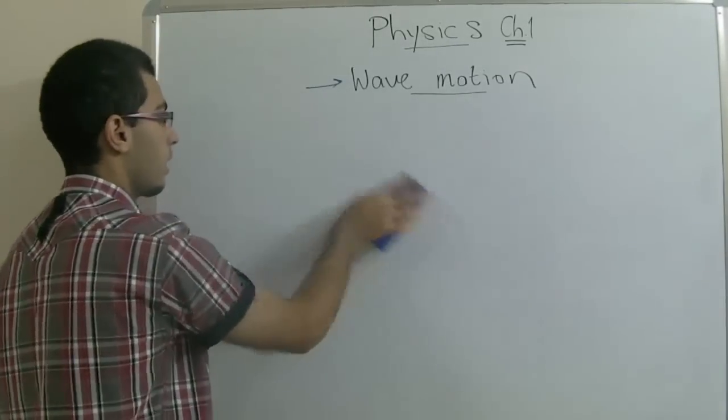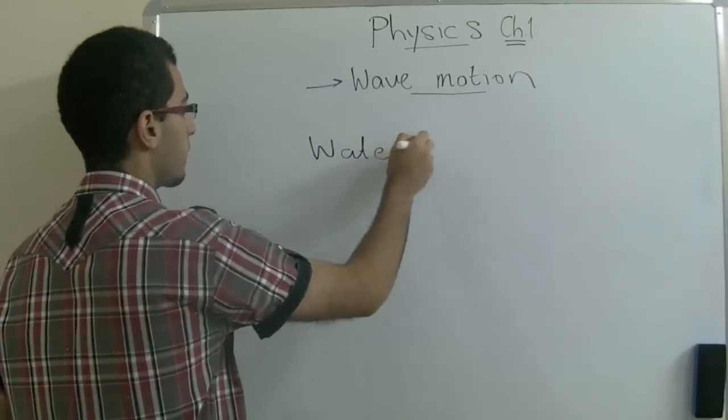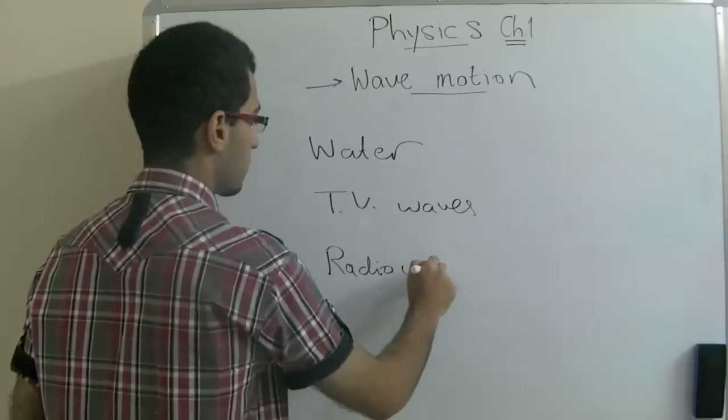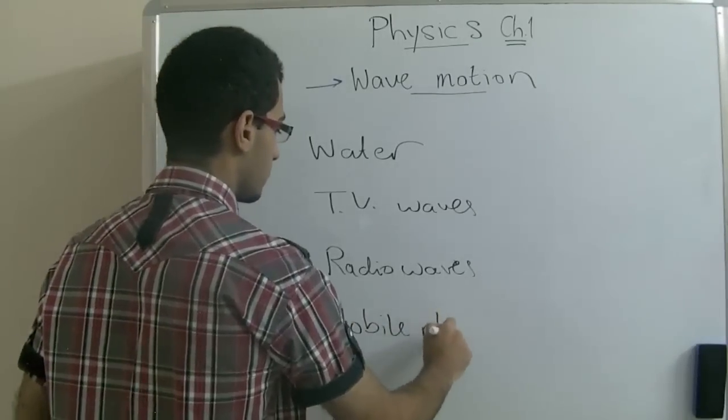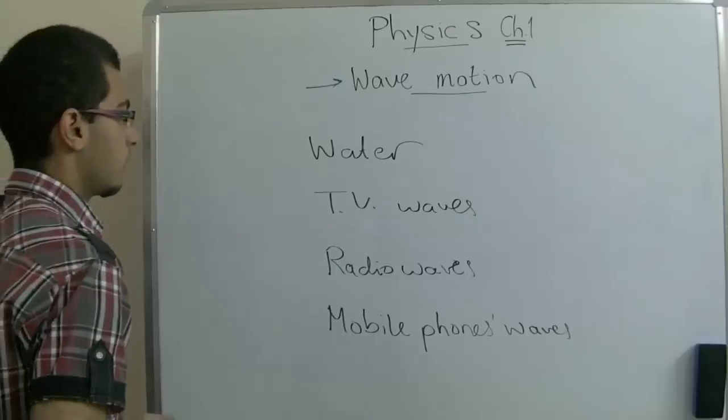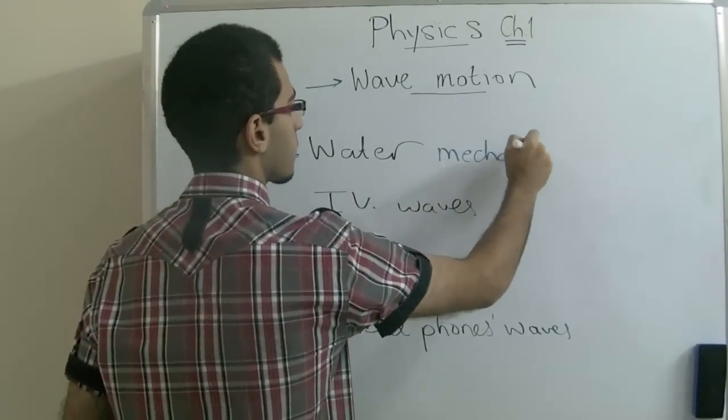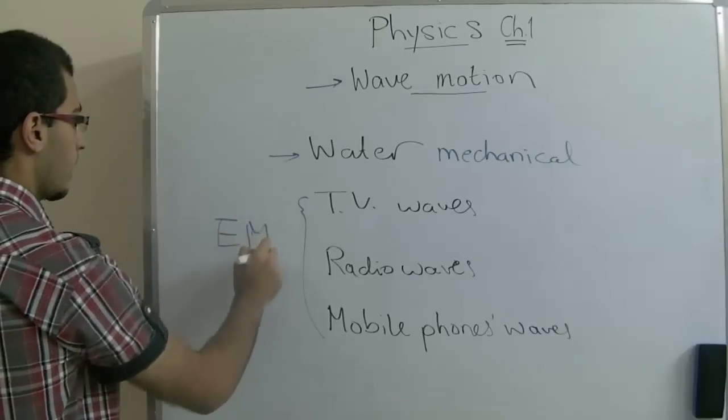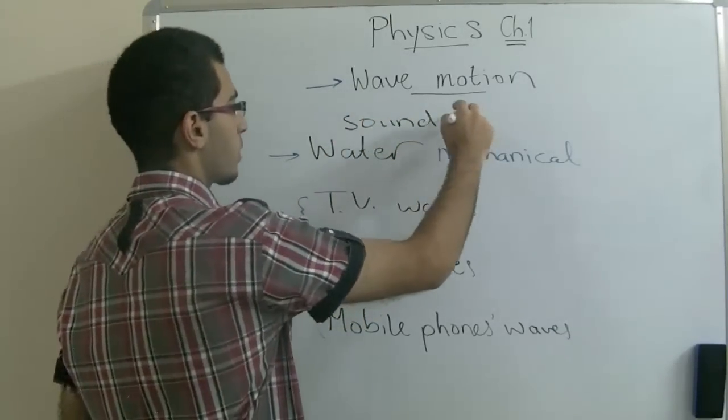We have some examples for some waves like water waves, TV waves, radio waves, and mobile phone waves. The water wave is called a mechanical wave. The TV waves, radio waves, and mobile phone waves are called electromagnetic waves, EM for short. We have also sound waves which are considered to be mechanical waves.